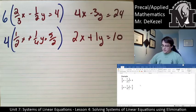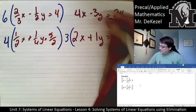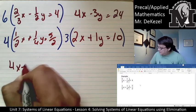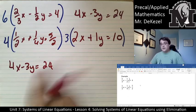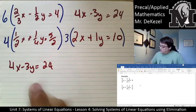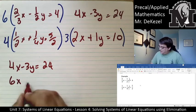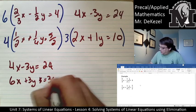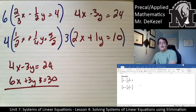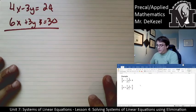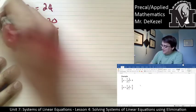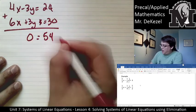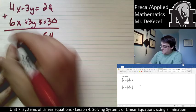Now I multiply the bottom equation by 3 to make the y's line up for addition: 3(2x + y = 10) gives 6x + 3y = 30. Adding to the top equation (4x − 3y = 24): 24 + 30 = 54; −3y + 3y = 0; 4x + 6x = 10x. So 10x = 54, divide both sides by 10: x = 54/10 = 27/5.